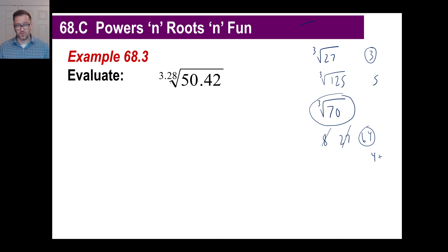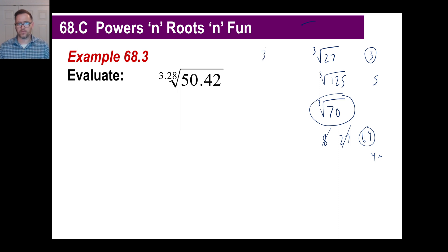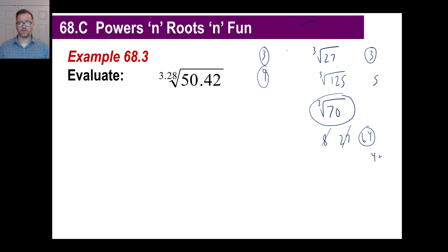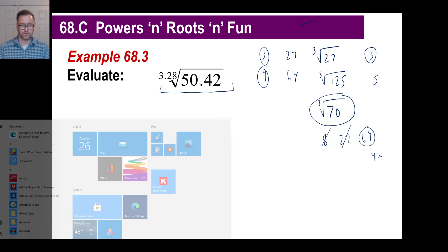For something like 50.42 to the 1/3.28 power — which is a little more than a cube root — you'd estimate: 3³ = 27 and 4³ = 64, so the cube root of 50 is somewhere between 3 and 4. You would never get the exact answer without a calculator, but this estimate tells you roughly where to expect the result.